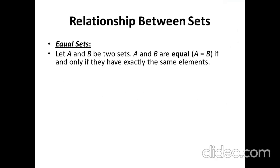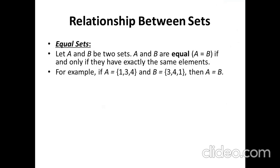The first relationship is equal sets. Let A and B be two sets. A and B are equal if and only if they have exactly the same elements. For example, if A is equal to {1, 3, 4} and B is equal to {3, 4, 1}, then A is equal to B. We learned in previous classes that the order of elements in sets does not matter, so {1, 3, 4} and {3, 4, 1} are equal.